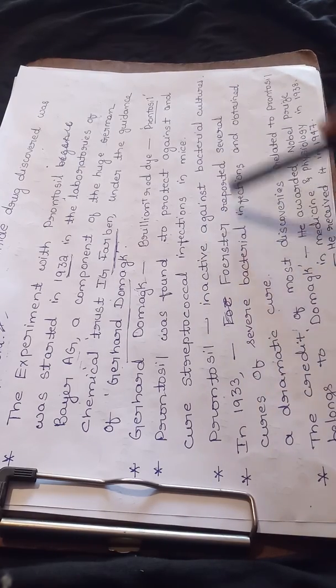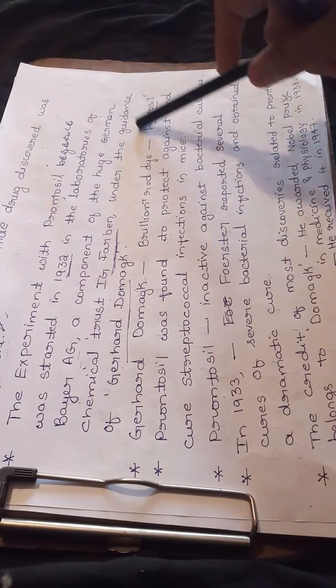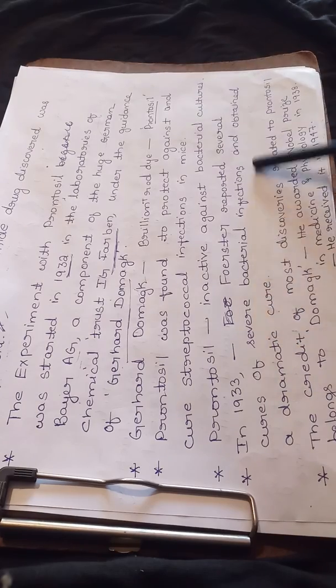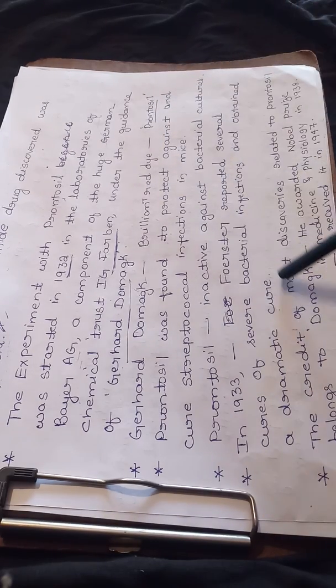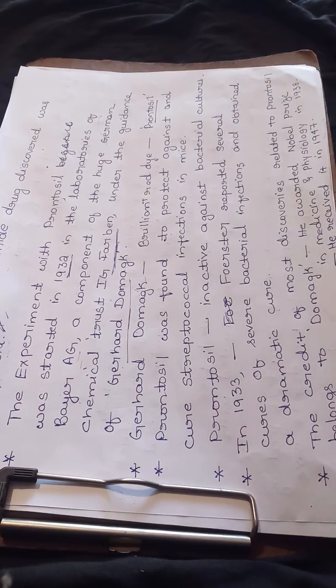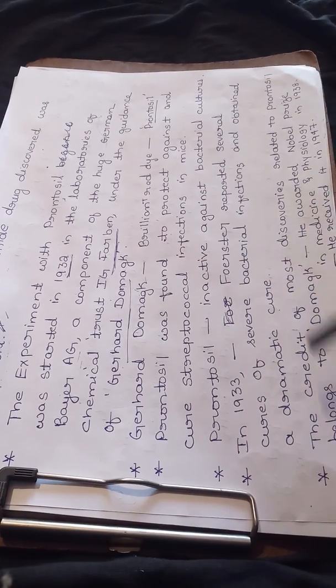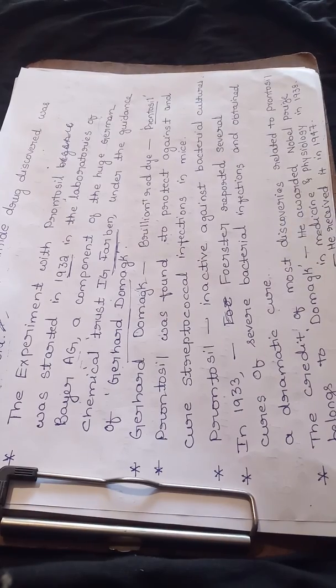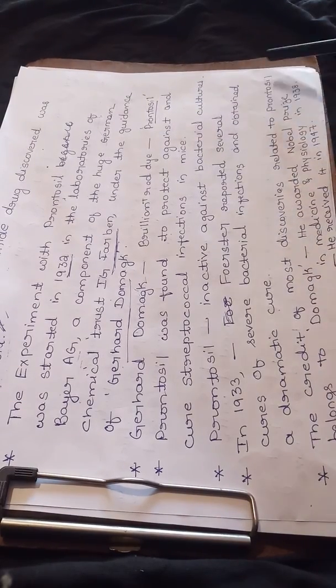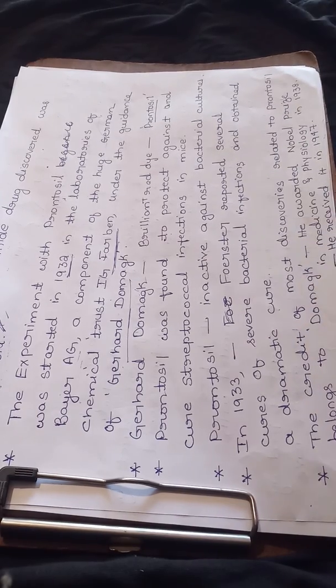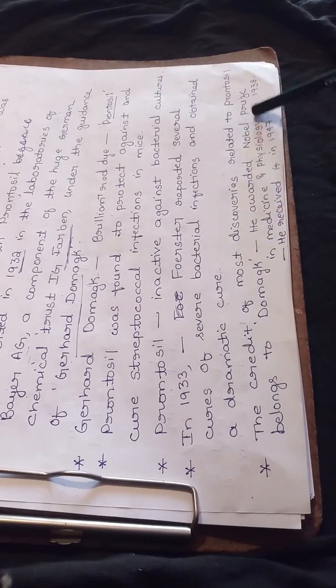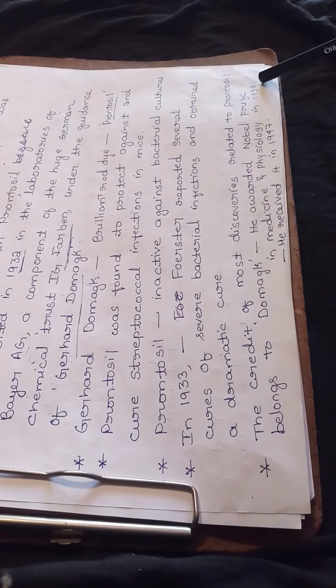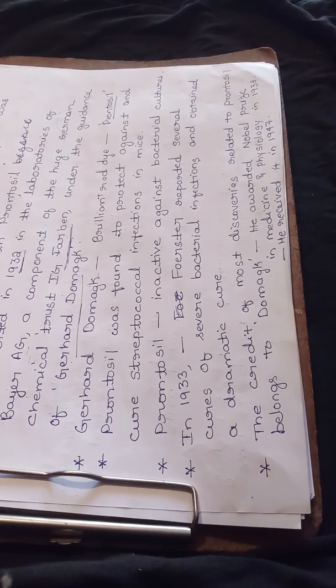In his report, he showed that prontosil is very good for the treatment of severe bacterial infections and obtained very dramatic cures. The credit of most discoveries related to prontosil belongs to Domag. For his pioneering work, he was awarded the Nobel Prize in Medicine and Physiology in 1938, but he denied to take that award and received it in 1947.